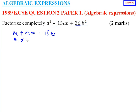These two numbers are -12b and -3b. We rewrite our expression like this: a² - 12ab - 3ab + 36b².